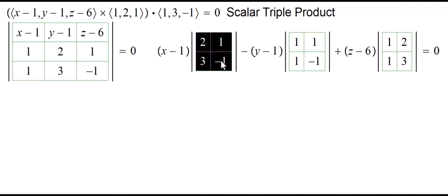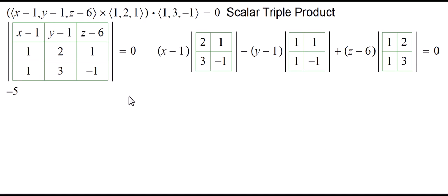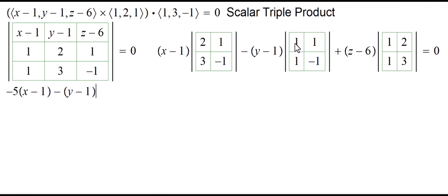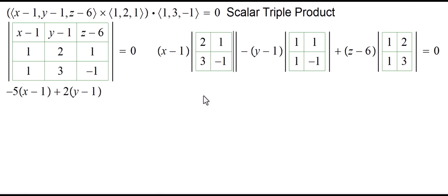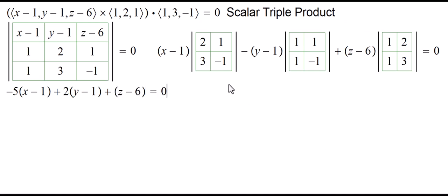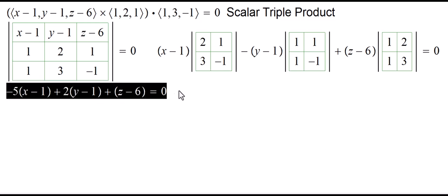For the next determinant: 1 times negative 1 is negative 1, then negative 1 times 1 is negative 1, giving negative 2 total — but negative times negative becomes positive 2. For the last term: 3 times 1 minus 2 times 1 gives 1, so the coefficient of (z minus 6) is simply 1. This gives us a good-looking equation of the plane.